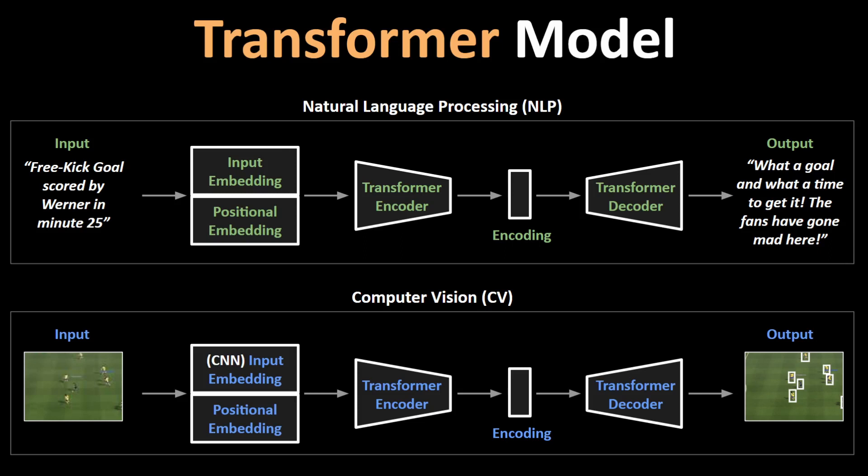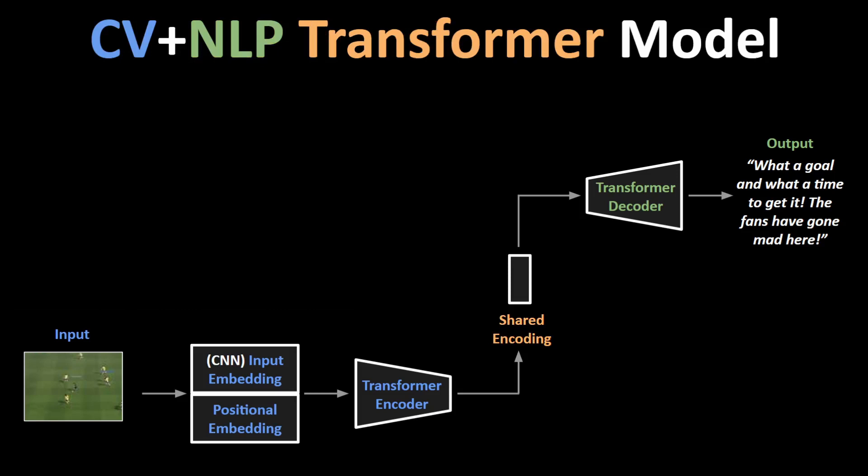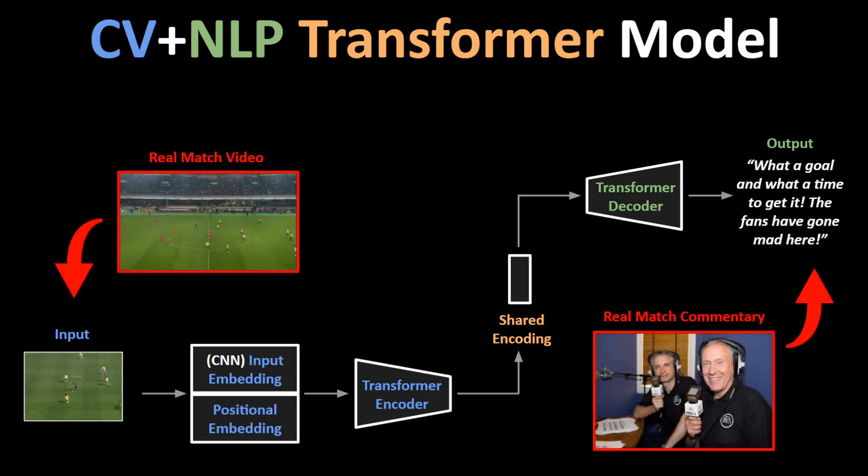Now, with regards to the problem of generating game commentary, this architecture is useful because we can combine the encoder of the image model with the decoder of the language model, which wasn't previously possible using the same model architecture. We can now use real-life sports games to learn commentary from video action, thereby connecting computer vision and natural language processing tasks together with a ready-made training dataset.